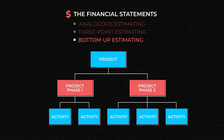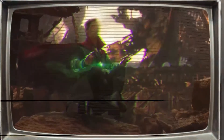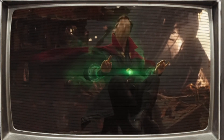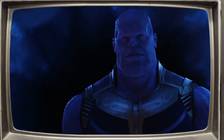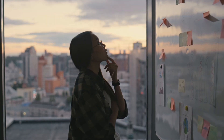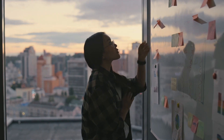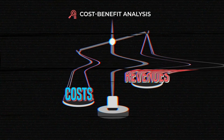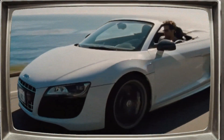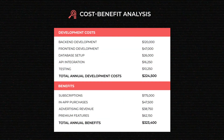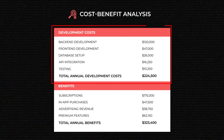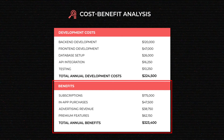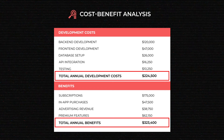Bottom-up estimating takes more time, but the results are usually more precise. Whichever technique you choose, remember that none of them is perfectly accurate. All sorts of unexpected things might happen along the way, so when estimating either time or money, leave yourself some wiggle room. The financials part is often complemented by the cost-benefit analysis, where you compare the expected costs and revenues to determine whether the project is worth the investment. The cost-benefit analysis usually looks like a table where one column lists estimated spending and another contains anticipated gains, with total values compared in the bottom line.